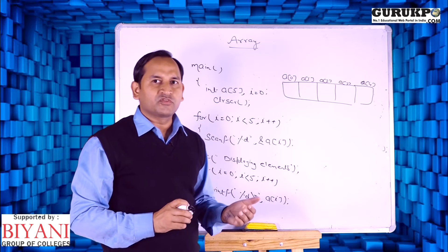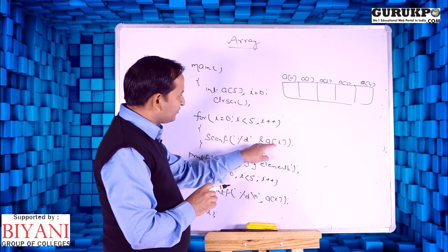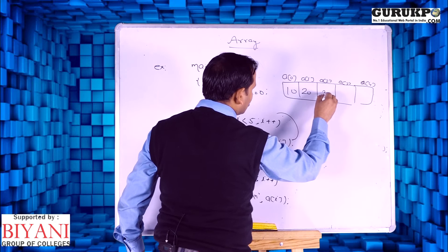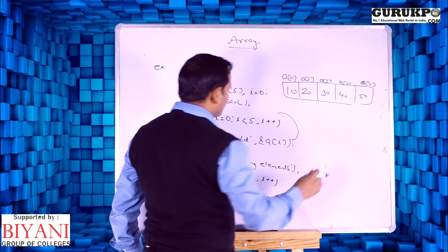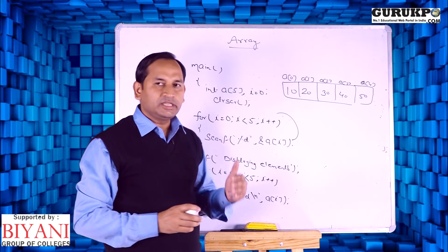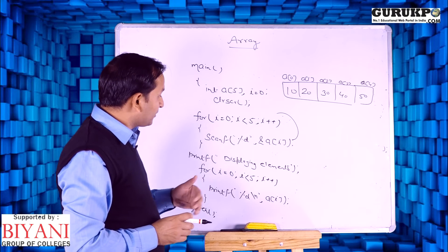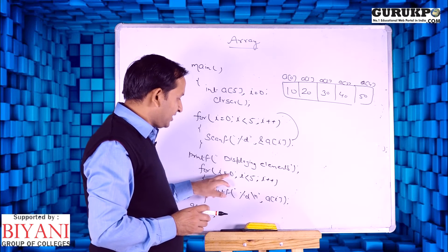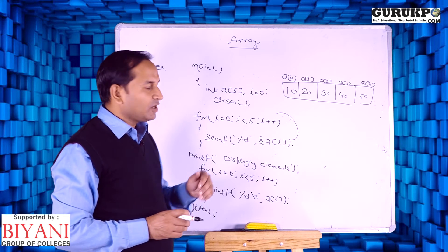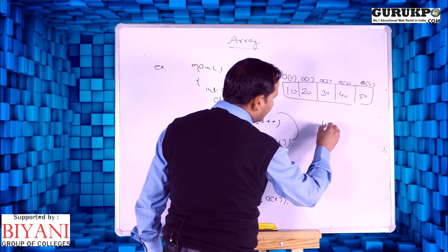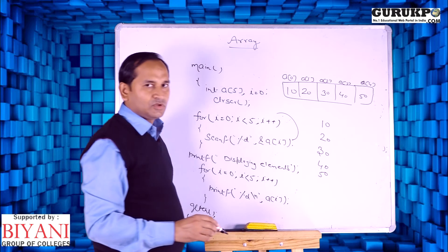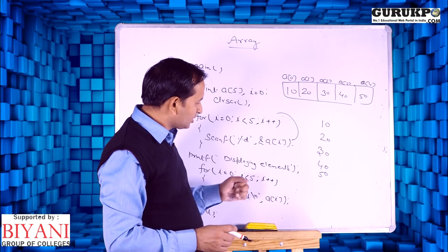scanf is used to receive values from the keyboard. Suppose we enter values: a[0]=10, then i increments, a[1]=20, a[2]=30, a[3]=40, and a[4]=50. So first we store values received from the keyboard. In the second part, we print all these values using a for loop, starting from i=0, i less than 5, i plus plus, using printf to print a[i]. So the output will be 10, 20, 30, 40, and 50. We can easily store and retrieve values inside an array.